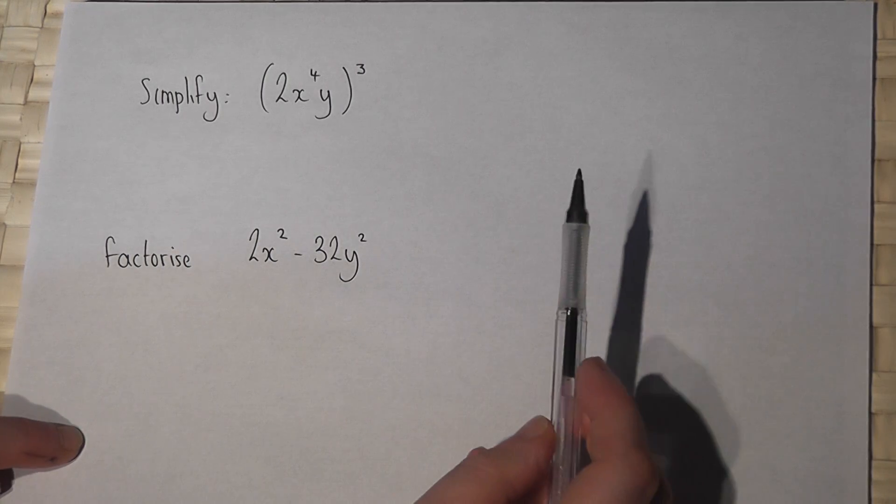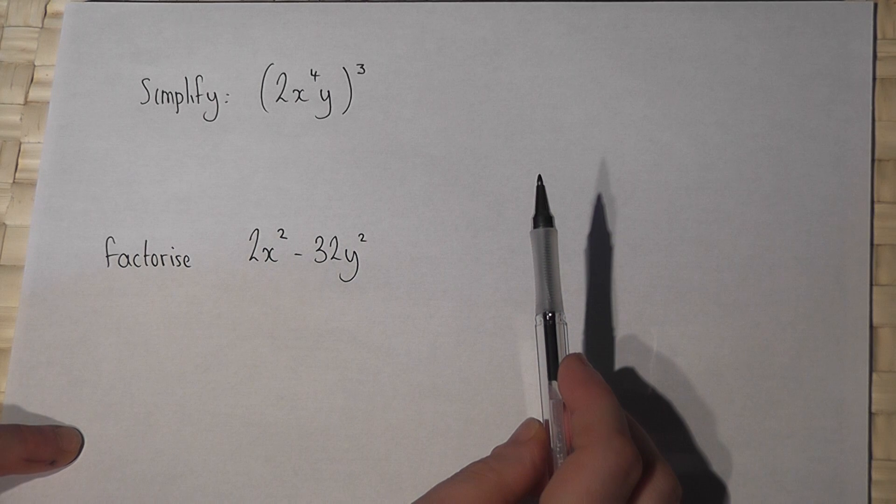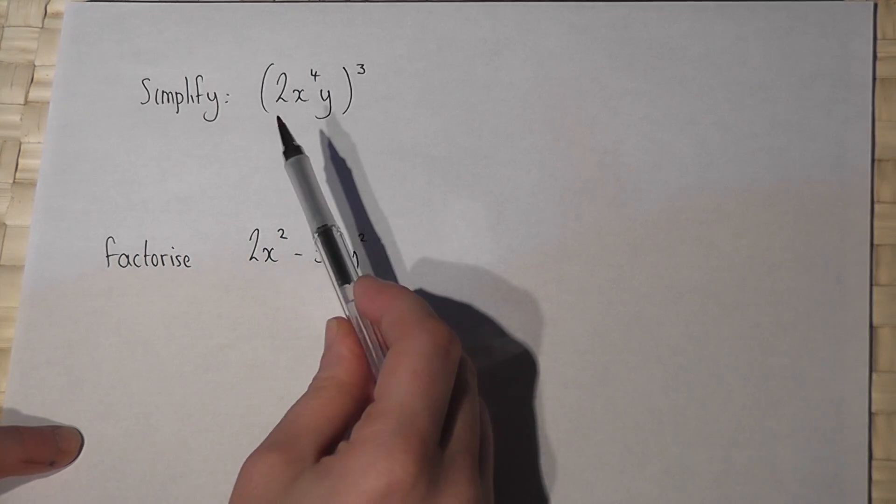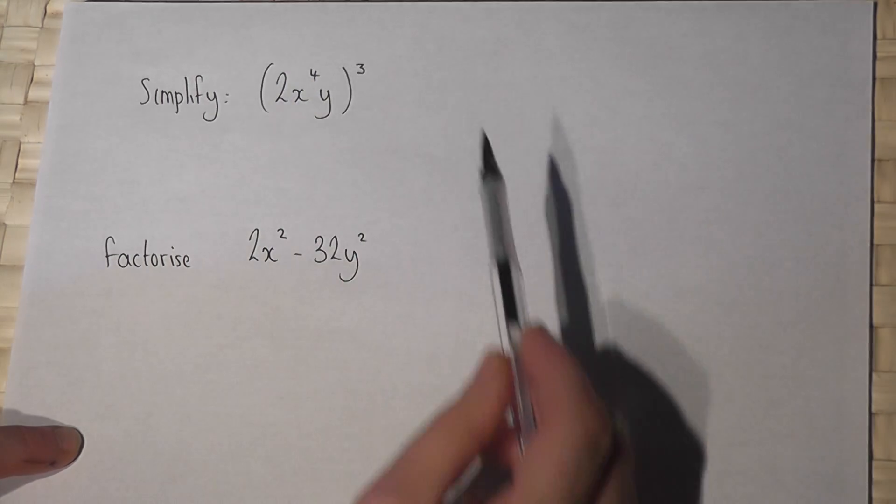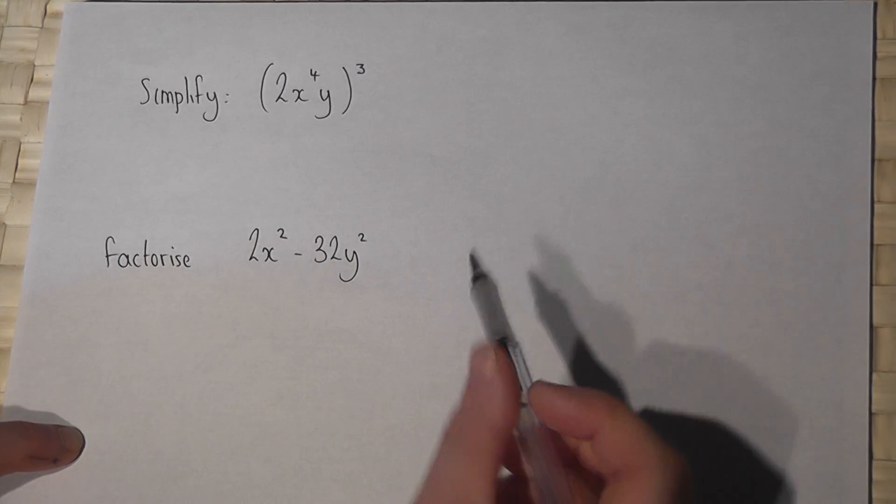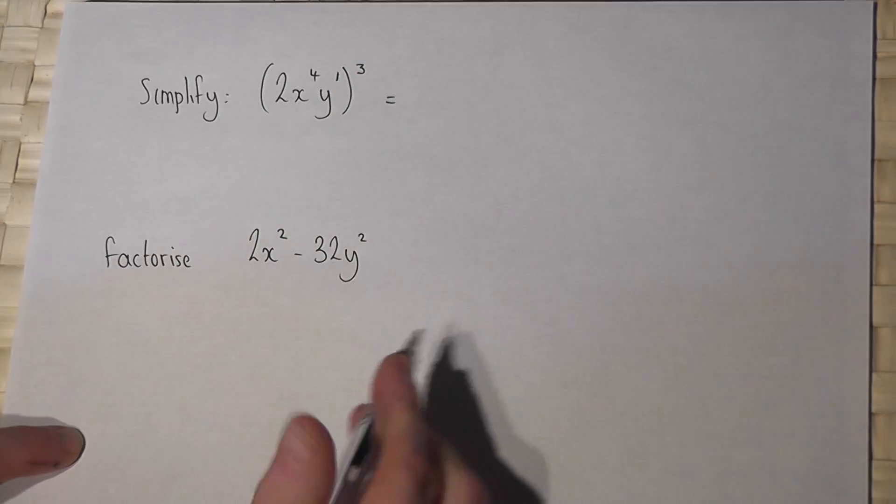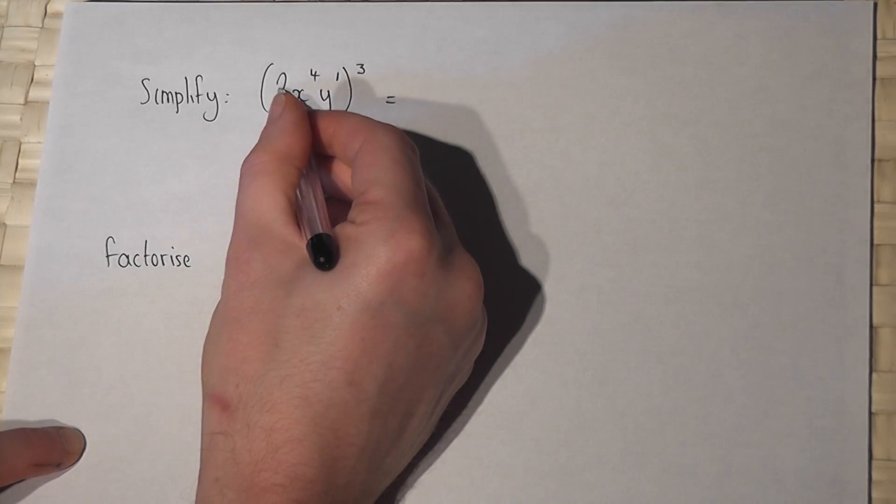This video reviews two key principles involving brackets. The first one asks us to simplify an expression, all in this case to a power of 3. Now then what I do here is I write the y as a power of 1 and what I must now do is cube all the terms in the bracket. Now 2 cubed is 2 times 2 times 2 which is 8.